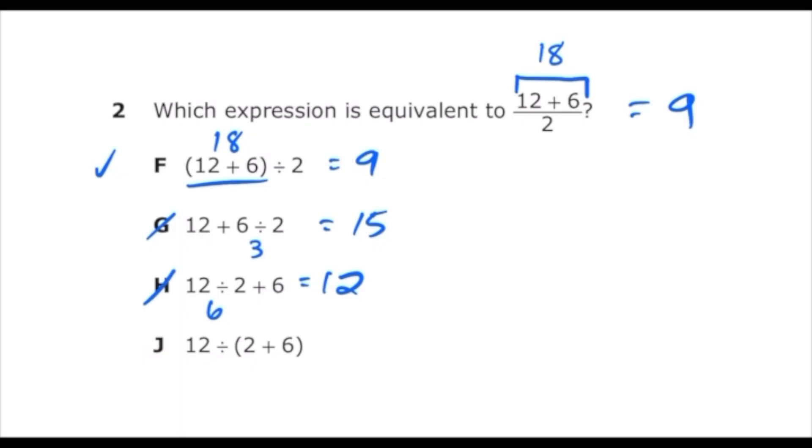Finally, letter J, we have to add 2 plus 6 to get 8. Then we can divide 12 divided by 8. We can reduce that down to 6 over 4 and then 3 over 2, which obviously is not equal to 9. So our correct answer is letter F.